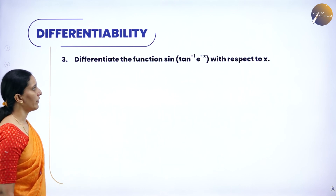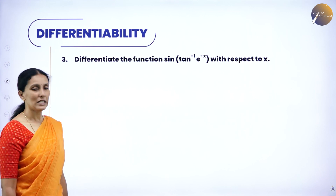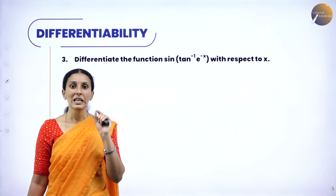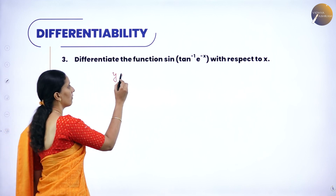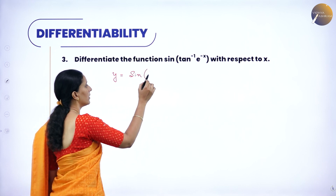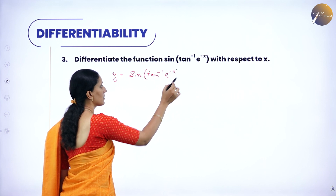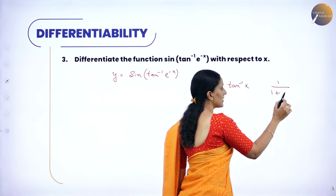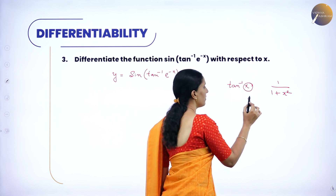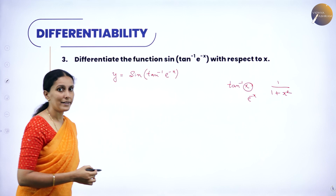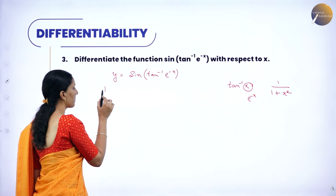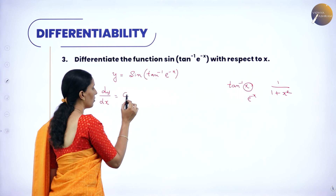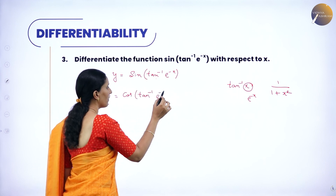Next: differentiate sin of (tan inverse of e to the power minus x) with respect to x. Be very careful — we have many functions here; it is a composite function, so use the chain rule. Let y equal to sin of (tan inverse of e power minus x). Remember the derivative of tan inverse x is 1 over (1 plus x squared). First differentiate sin: the derivative of sin of any variable is cos. So we get cos of (tan inverse e power minus x).